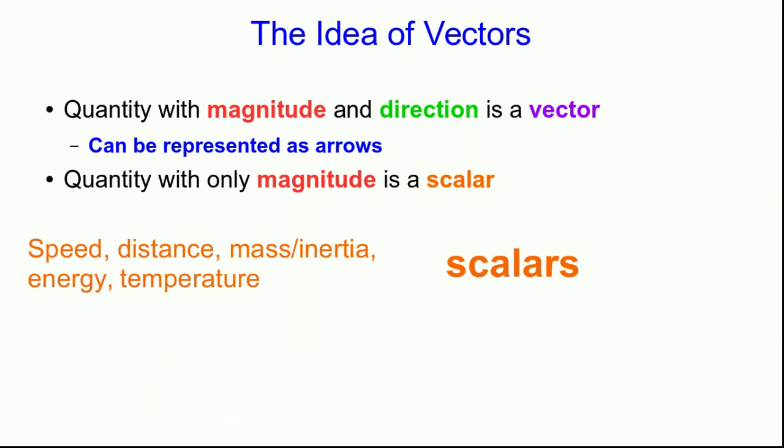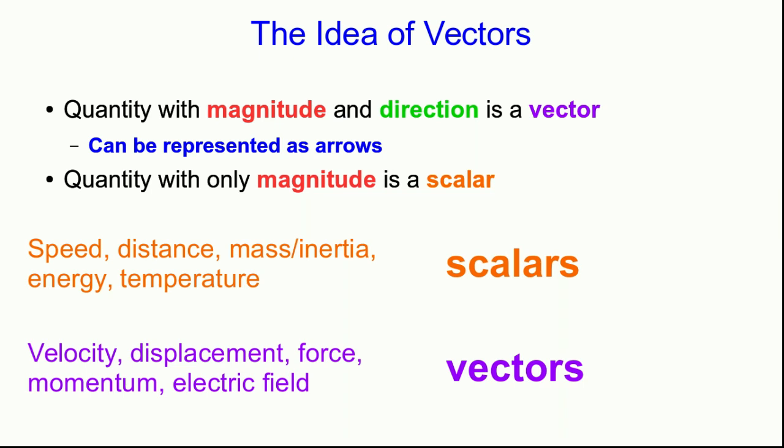We're going to meet lots of quantities that are both scalars and vectors, and you've probably met most of them in other courses before. Speed, distance, mass or inertia, energy and temperature are all scalars. On the other hand, velocity, displacement, force, momentum, and electric field are all examples of vectors.